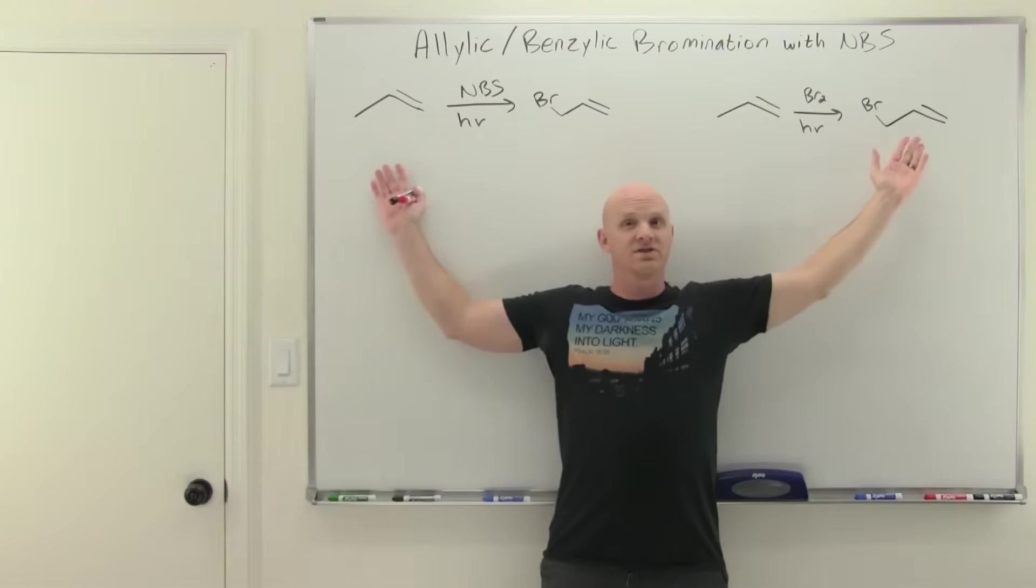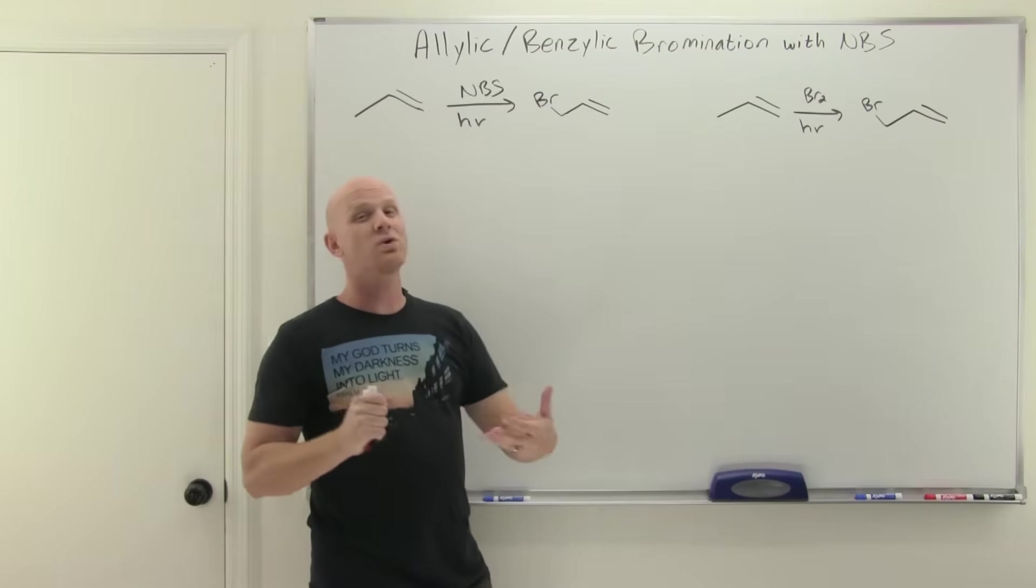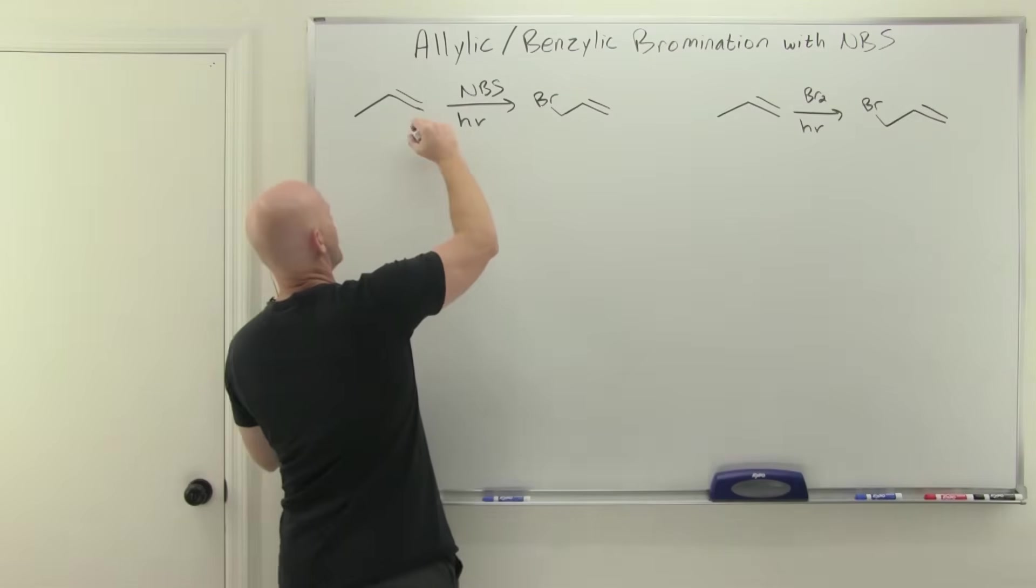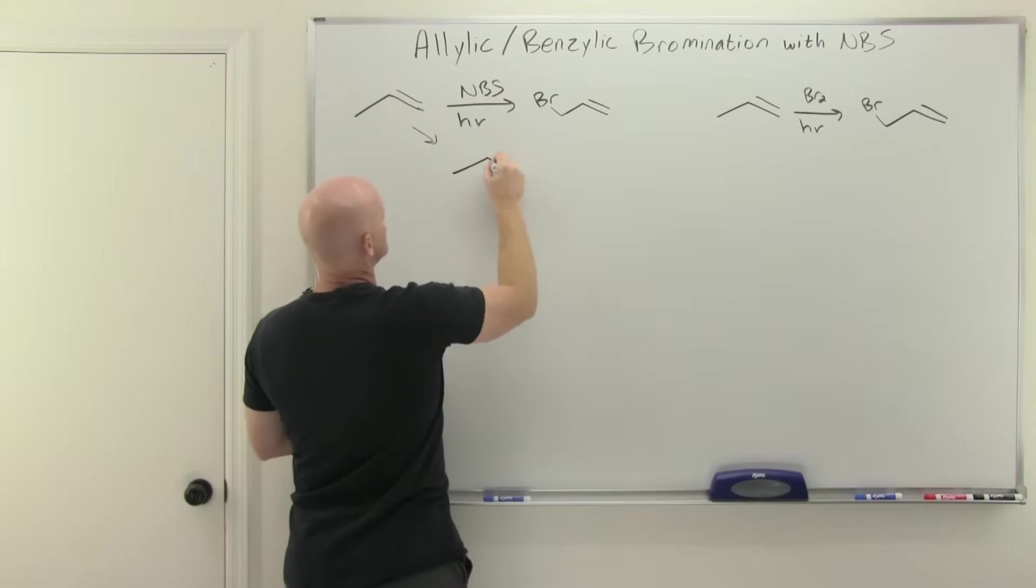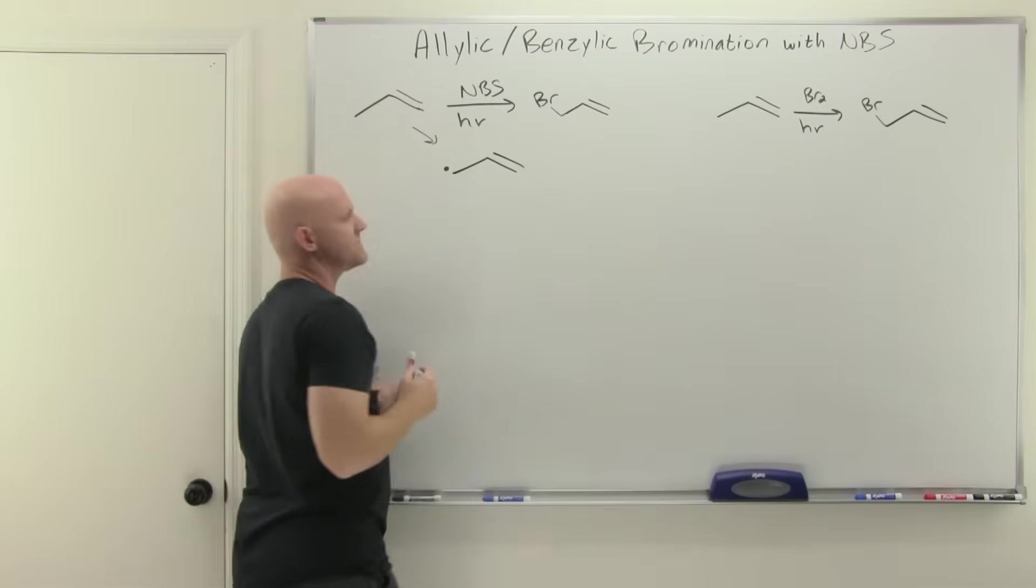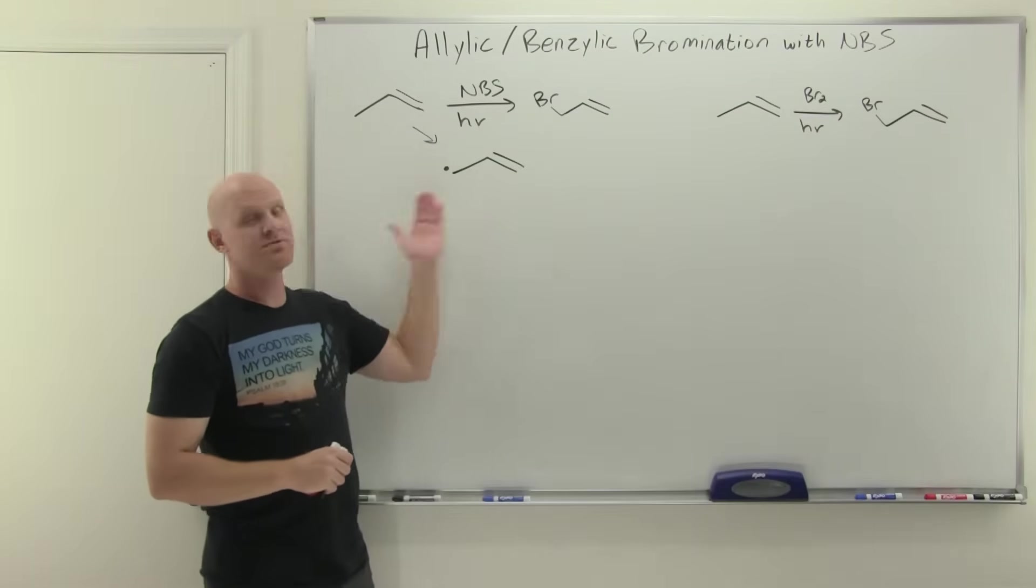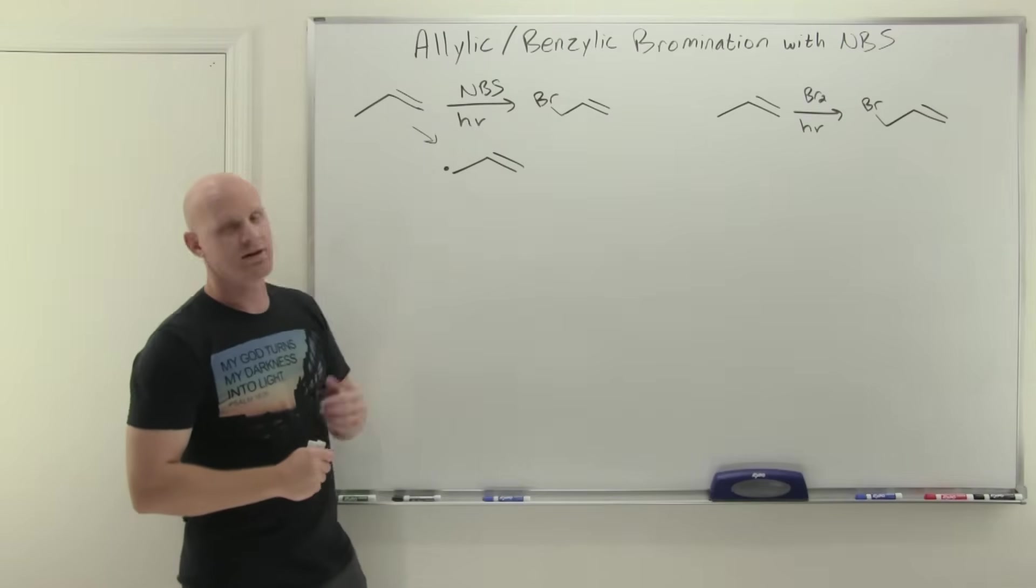Now I show both of these as forming the desired product. So then again, why don't we use BR2? Well, because you're also going to form some other product as well. Now if we take a look real quick at the intermediate involved here, if we want to brominate right on this carbon, then somewhere along the way, we would have formed that lovely allylic radical.